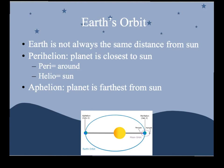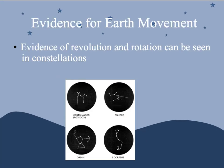It's interesting that the hotter months are when we're further away from the sun. Evidence for Earth's movements are the constellations — we know we're rotating and revolving because we can see these constellations at certain times of the year. Constellations are connections of stars that form some kind of picture.